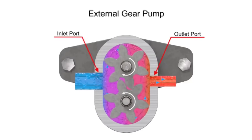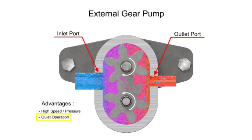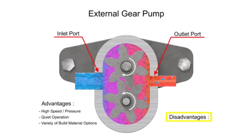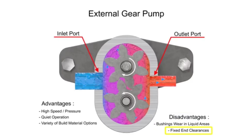The advantages of external gear pumps are their high speed and pressure, relatively quiet operation, and a design that accommodates a wide variety of materials. Disadvantages include bushings in the liquid area that can become worn and fixed end clearances.